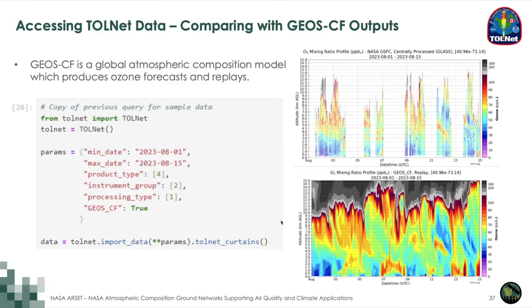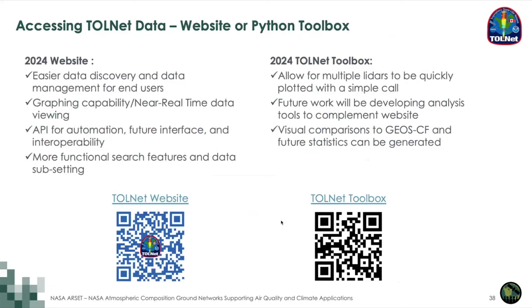In summary: if you are on the website you can discover the data, make near-real-time graphs, view individual days of ozone lidar data, and use the API for automation and interoperability. If you want to pull multiple lidars, compare to GOCF or other air quality models, we recommend the TOLNet Toolbox on the ASDC GitHub. We hope both will continue to be supported in the near future, and if you have suggestions for tools you'd like to see, please feel free to reach out.